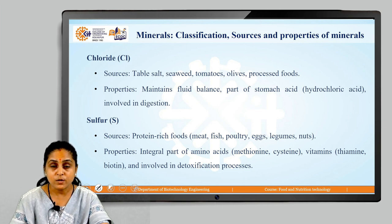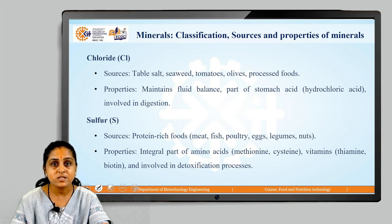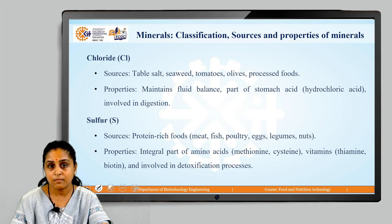The next macromineral is sulfur. Sources of sulfur are protein-rich foods — meat, fish, eggs, legumes, poultry and nuts. Properties of sulfur: they are an integral part of amino acids like methionine and cysteine, also part of vitamins thiamine and biotin, and they are involved in detoxification processes in our body.